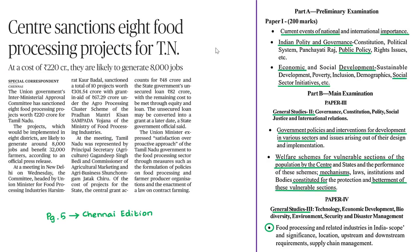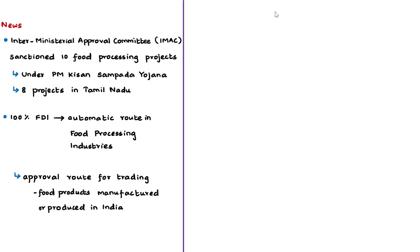Moving on to the next discussion about the Agro Processing Cluster Scheme under the Pradhan Mantri Kisan Sampada Yojana. The news mentions that the inter-ministerial approval committee has sanctioned 10 food processing projects worth 301 crore rupees. This meeting was held under the chairpersonship of the Union Minister for Food Processing Industries, and these projects were sanctioned under the Pradhan Mantri Kisan Sampada Yojana.